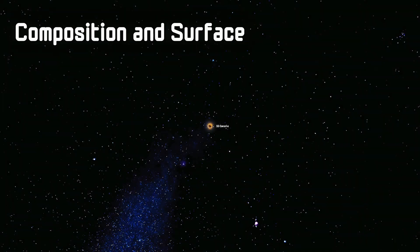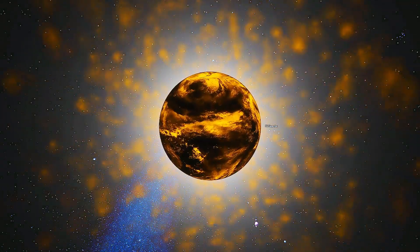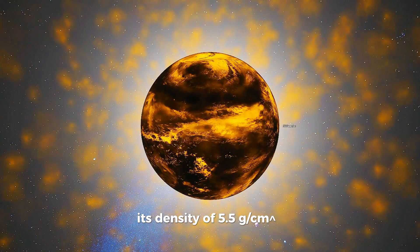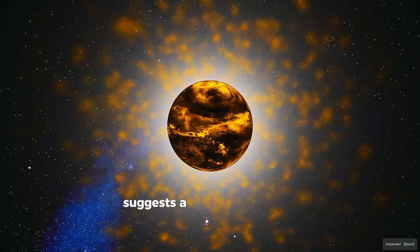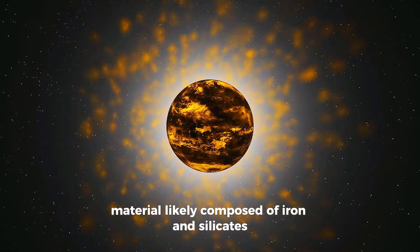The planet is believed to have a mass approximately 8 times that of Earth, and a radius twice that of Earth. Its density of 5.5 g/cm³ suggests a composition that includes a significant amount of rocky material, likely composed of iron and silicates.